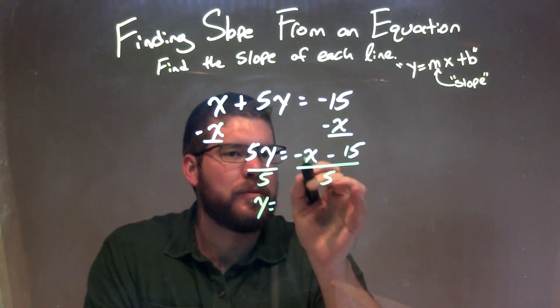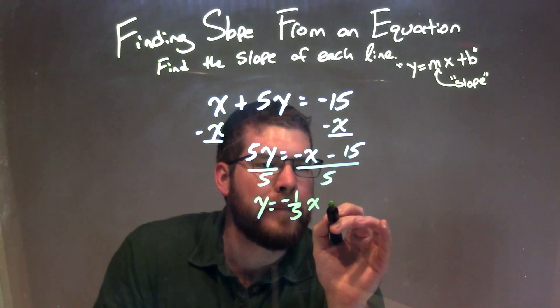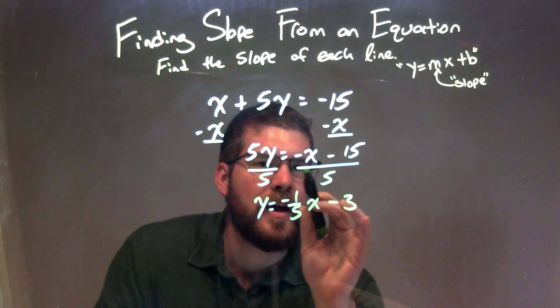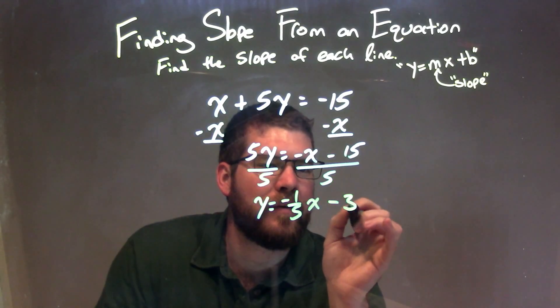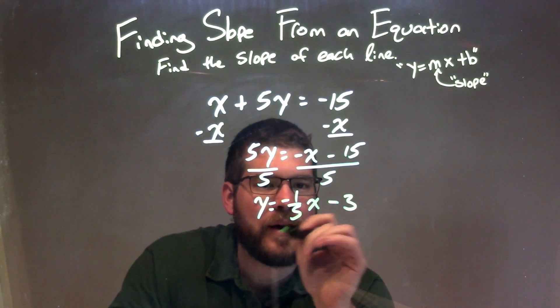Well, 5 here I need to distribute to both parts there. So we have negative 1 fifth x minus 15 divided by 5, which is 3. So negative x divided by 5 is the same thing as negative 1 fifth x, and 15 divided by 5 is 3, and there's a minus sign in between. So now we have y equals negative 1 fifth x minus 3.